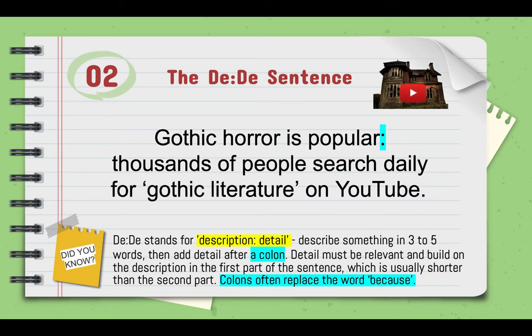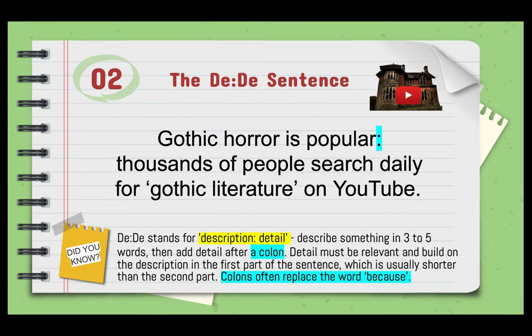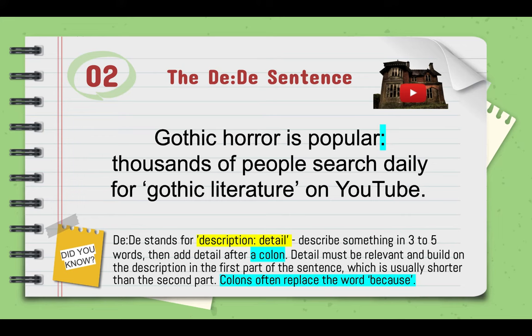The detail must be relevant and build on the description in the first part of the sentence. That first part before the colon is usually shorter than the second part, which goes into more detail. You can think of a colon as replacing the word 'because.' The example reads: 'Gothic horror is popular: thousands of people search daily for gothic literature on YouTube.' You could easily replace the colon with 'because,' and the second part is longer as it adds detail.